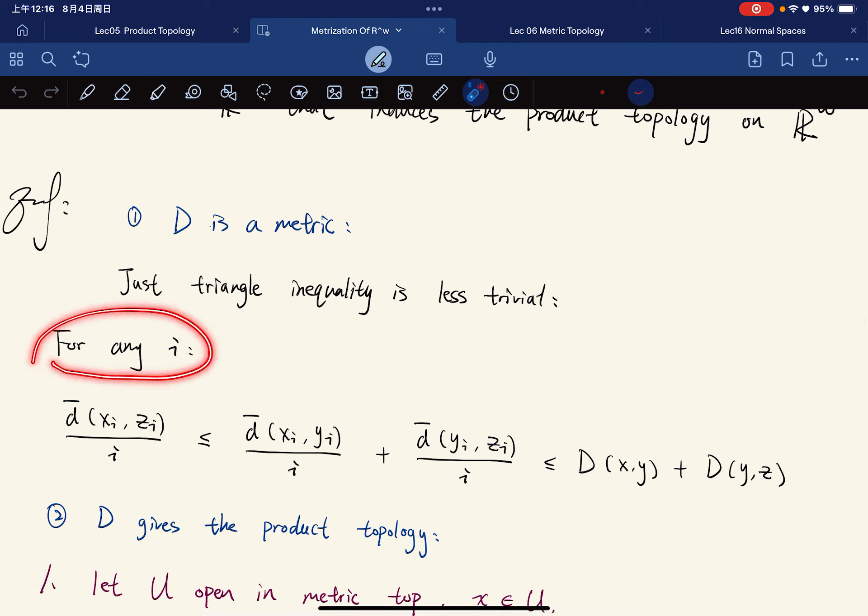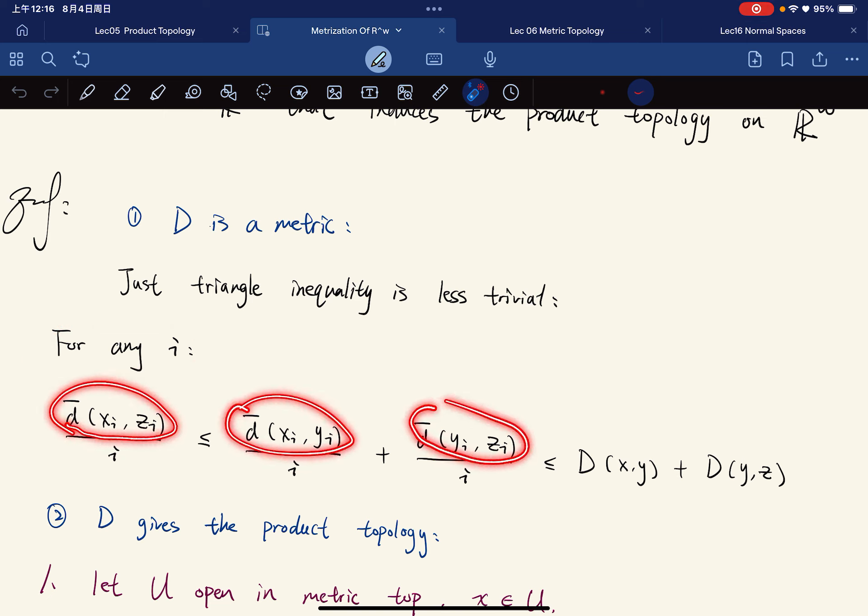So for any i, we have triangle inequality in each component. This triangle inequality holds in every component. And then now we just divide by i on both sides.